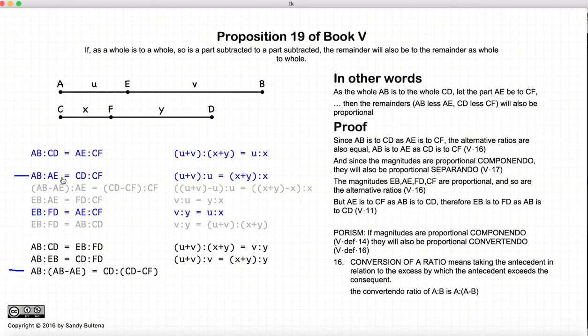Here is our componendo ratio, and here we have the convertendo ratio. So if AB to AE is equal to CD to CF, then AB to AB minus AE would be equal to CD compared to CD minus CF, because these two relationships all follow from these proofs.